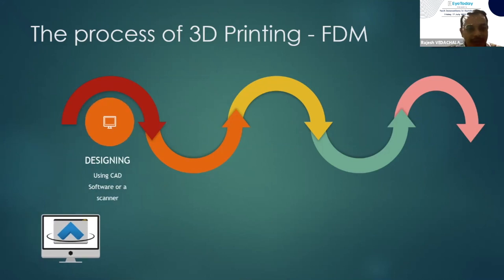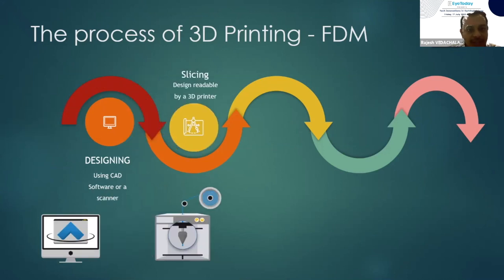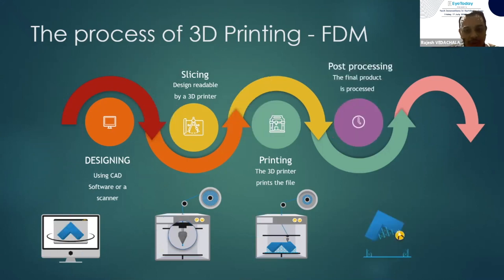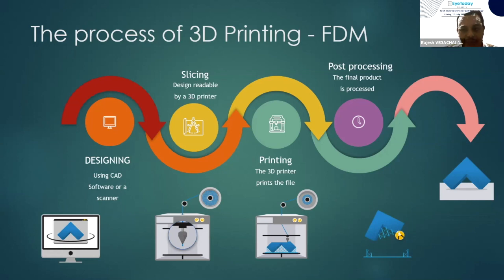For 3D printing any device, you have to design it and then get a g-code file by slicing and feed it to a 3D printer. The 3D printer starts printing the image you have designed and gives you a final object. In a normal printer, we get a printed image on paper, but in a 3D printer, you will get a final object — any object which you have designed.